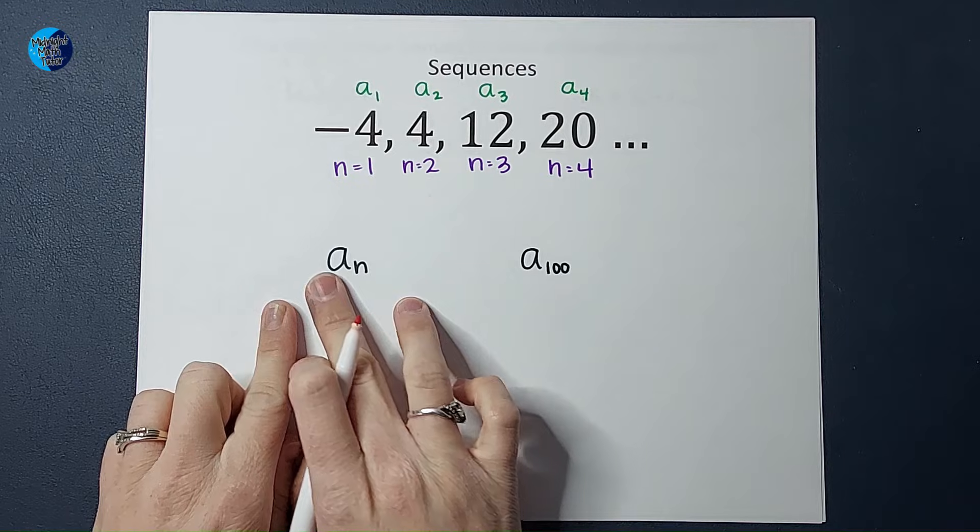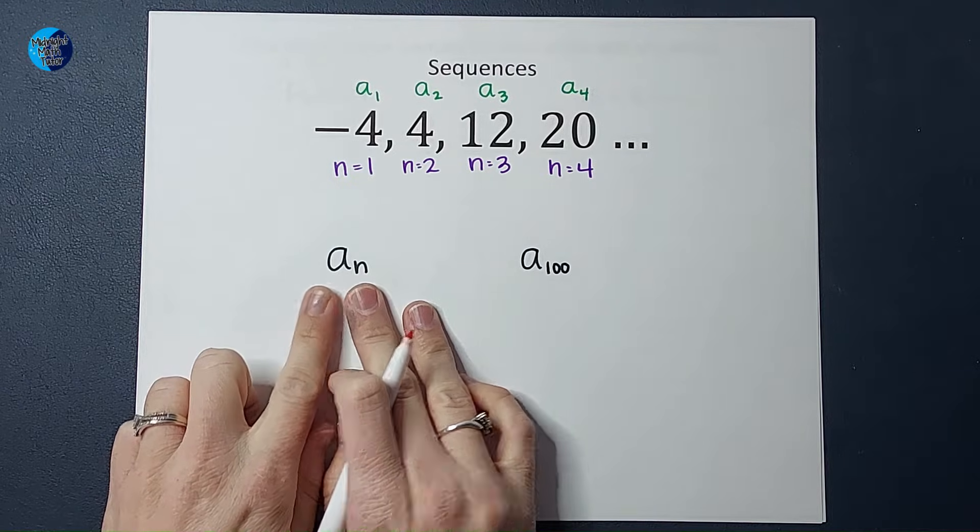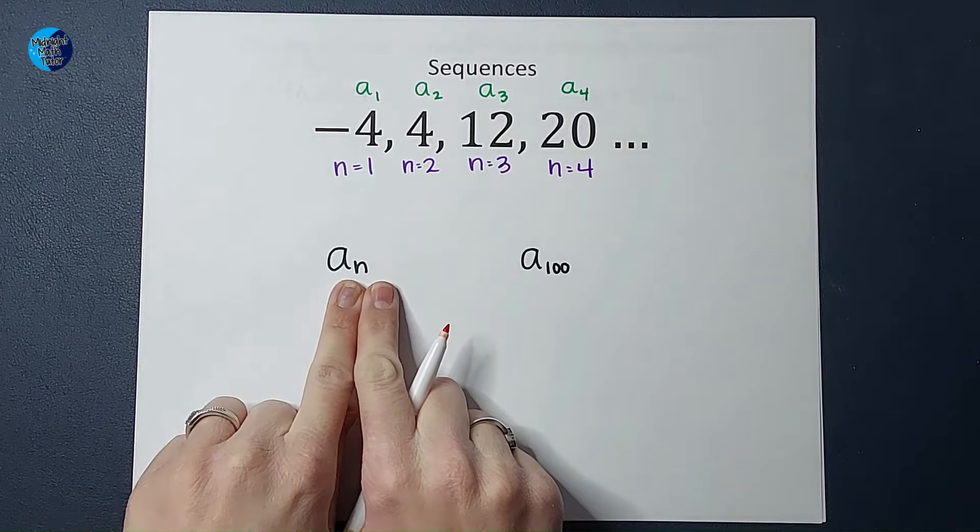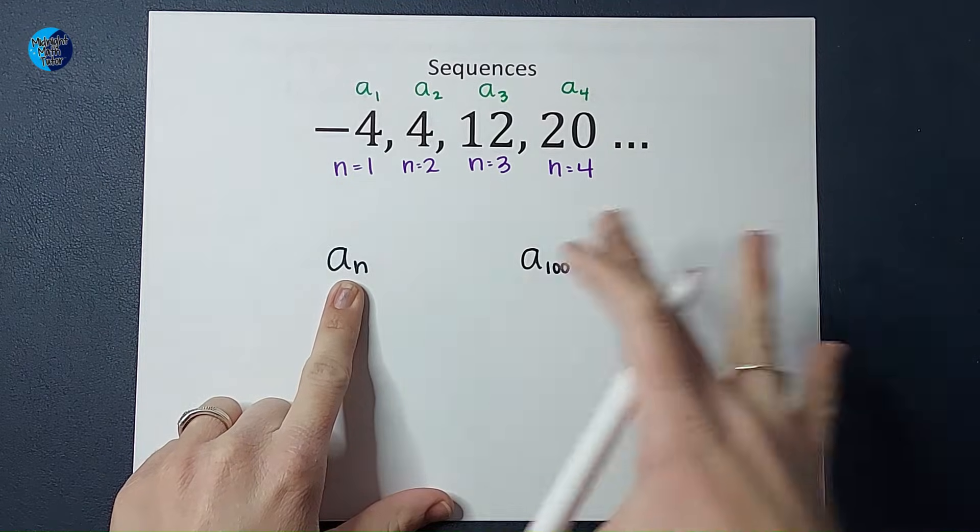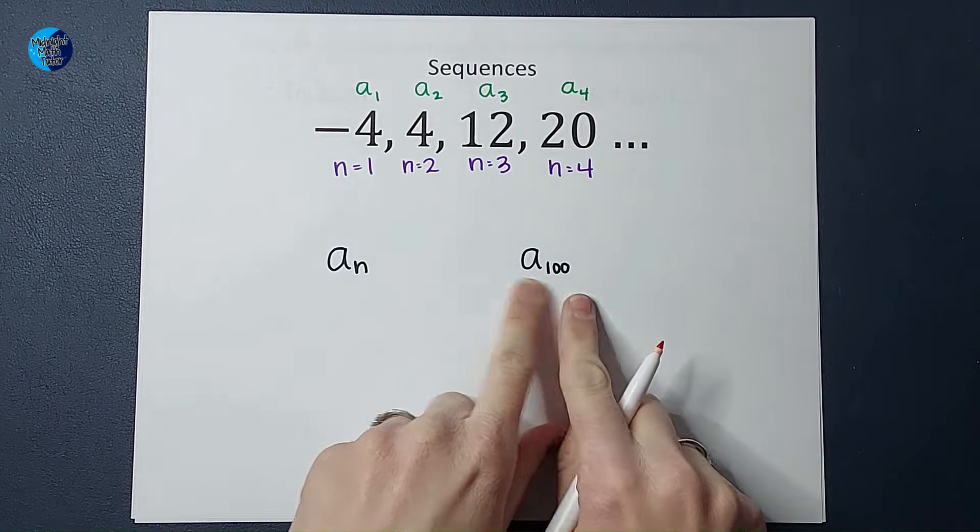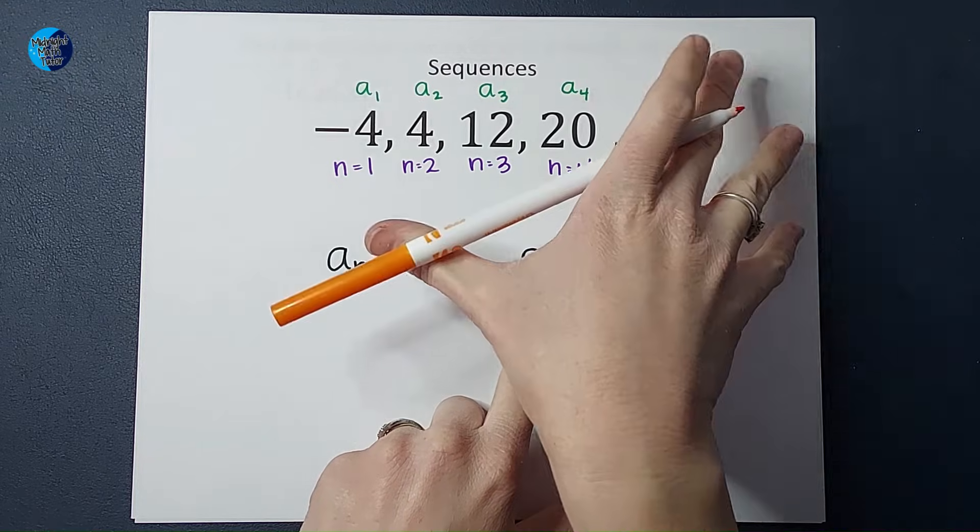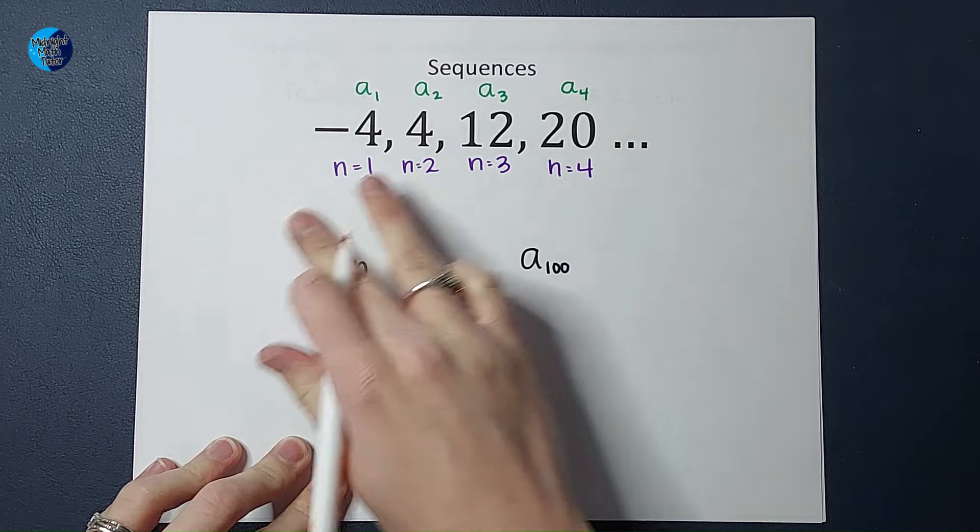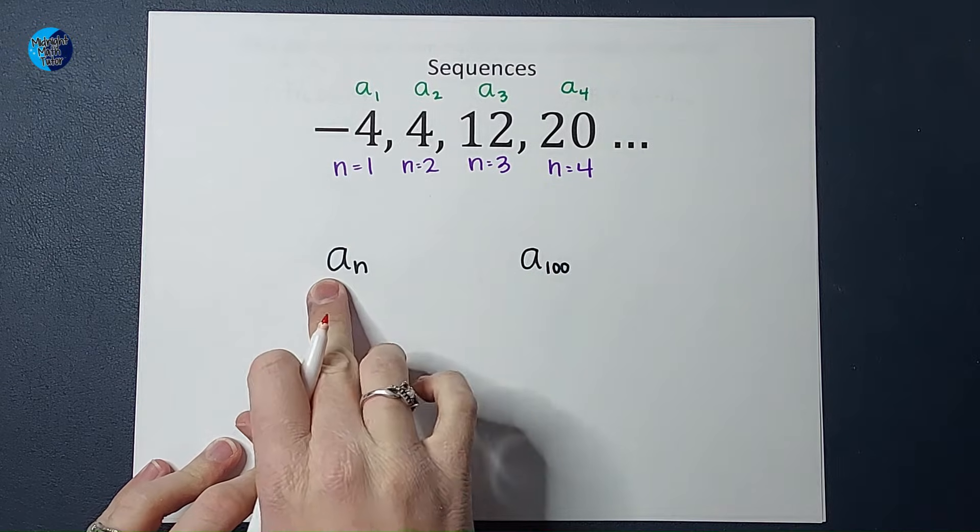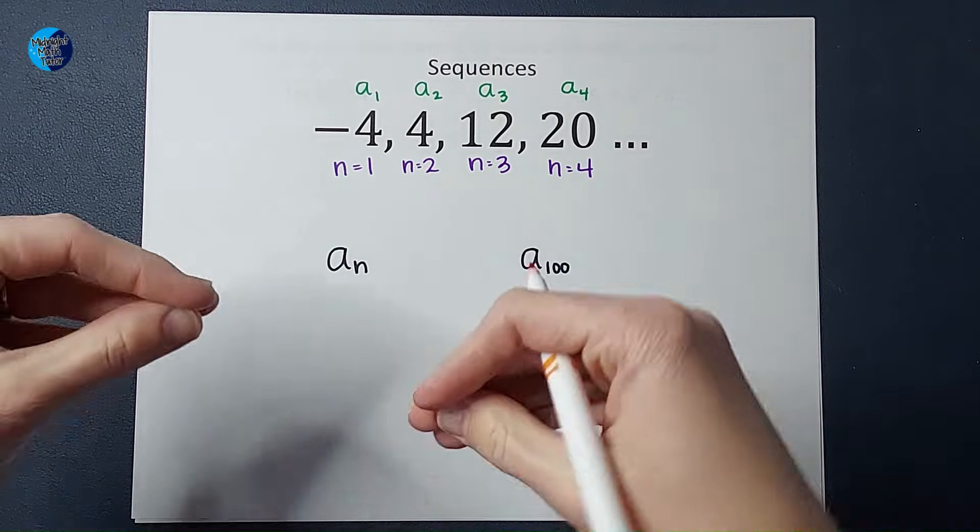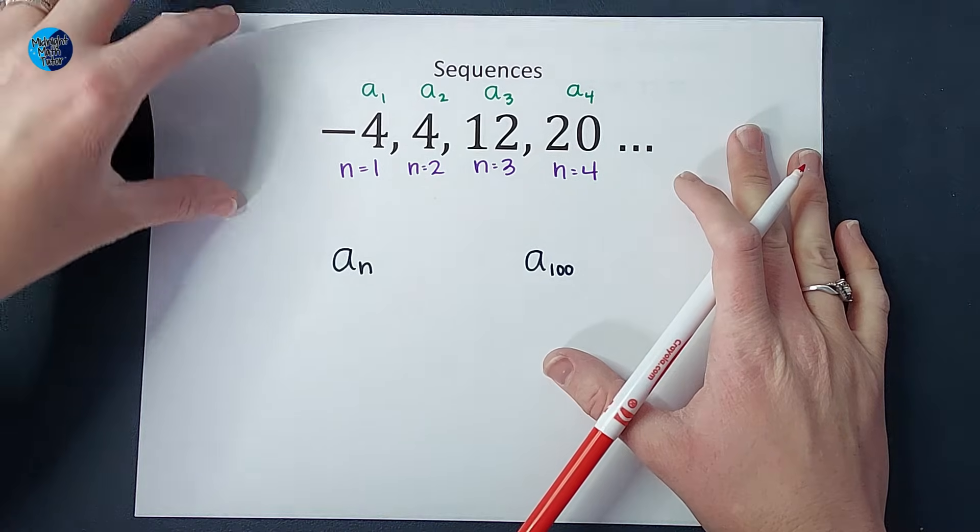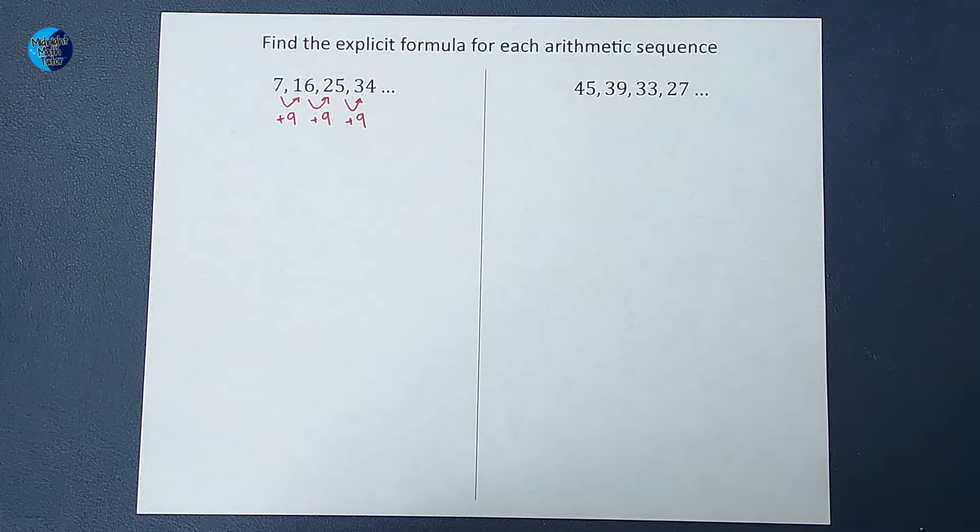You're also going to see a sub n quite frequently. What that is saying is plug in whatever number you want for n to find that in the sequence. So if I had a sub 100, I'm looking for the 100th term. As we write our formulas, we're going to leave a lot of things as a sub n so people can plug in what they want.